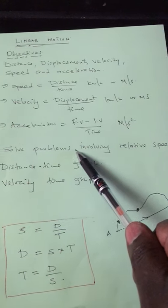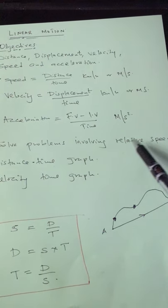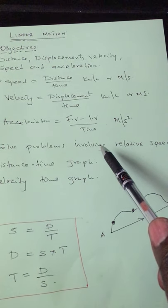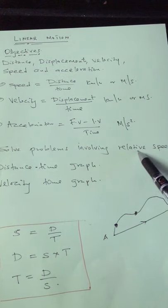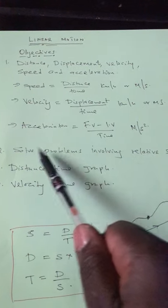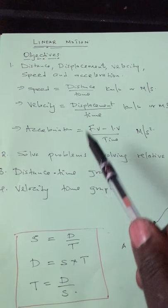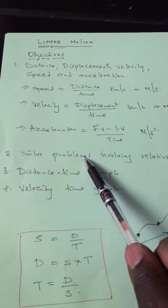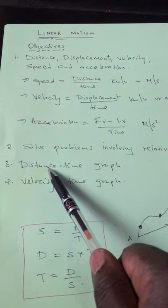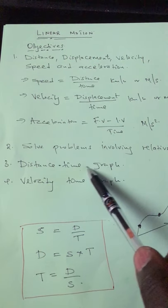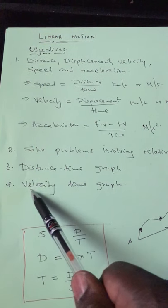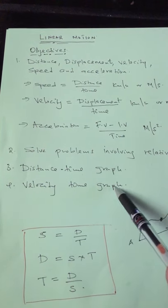We are supposed to solve problems involving relative speed — this is what we'll start with. Another objective is to learn how to interpret distance-time graphs and use them in equations, and there is also the velocity-time graph, which is a very special part.